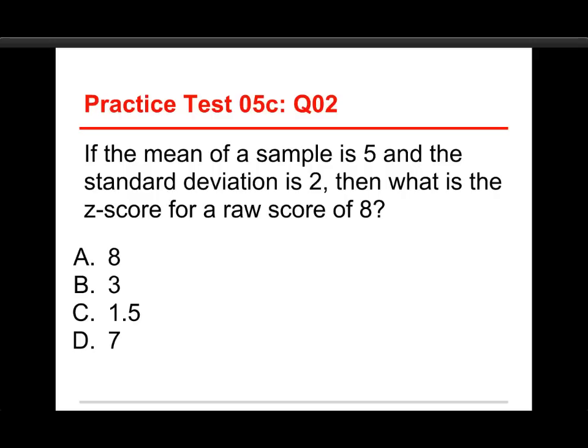All right, question number two. If the mean of a sample is 5, and the standard deviation is 2, then what is the Z-score for a raw score of 8? And the choices are 8, 3, 1.5, and 7.